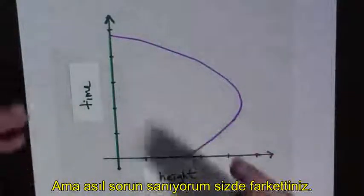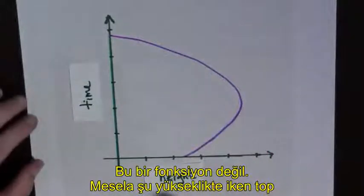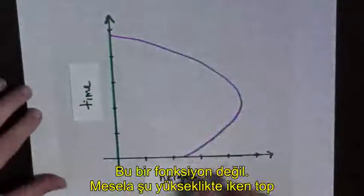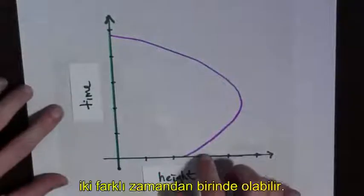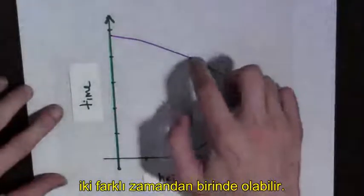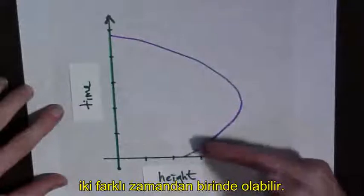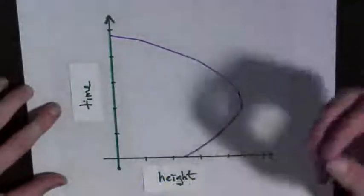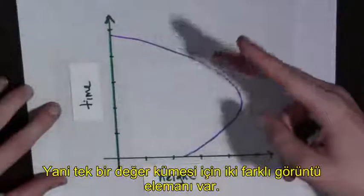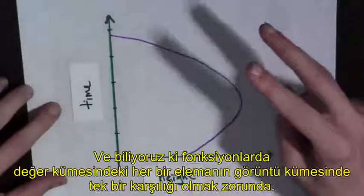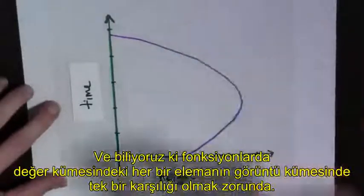But there's a problem. And I think you can see what it is. Because this is not a function. For example, for this height right here, there are two times when the function is at this height. That's a single input with two outputs. We can't have a single input with two outputs and still be a function.